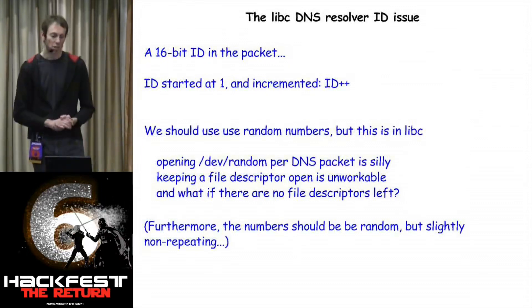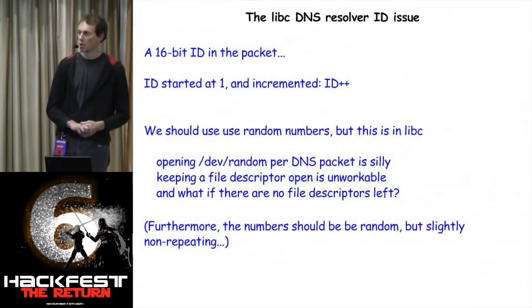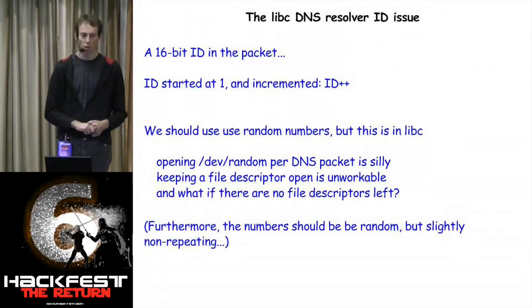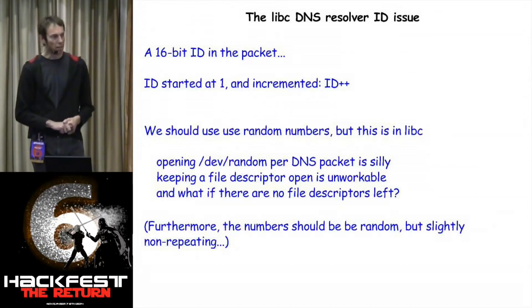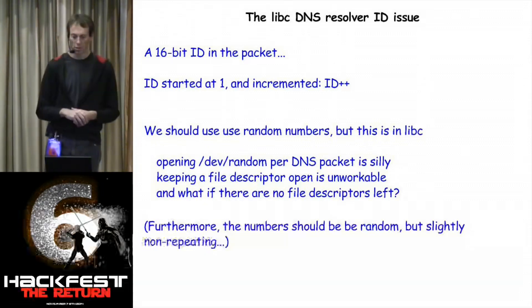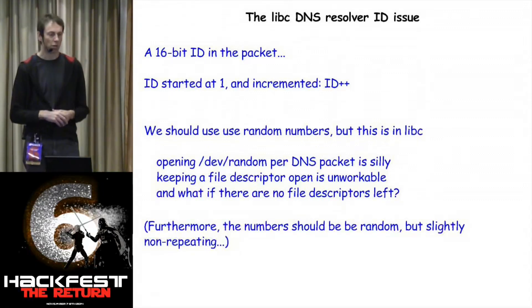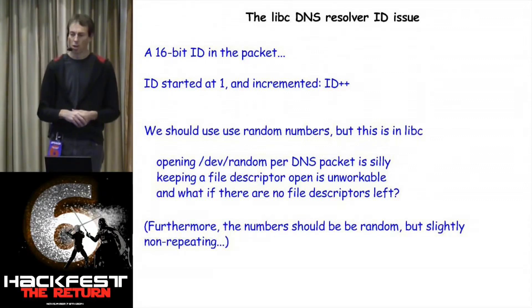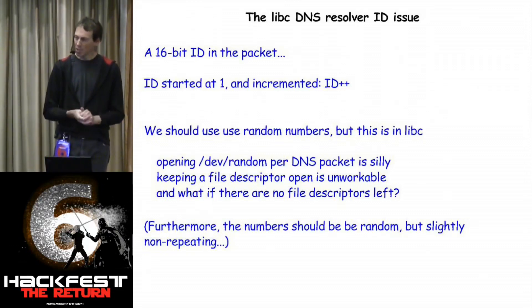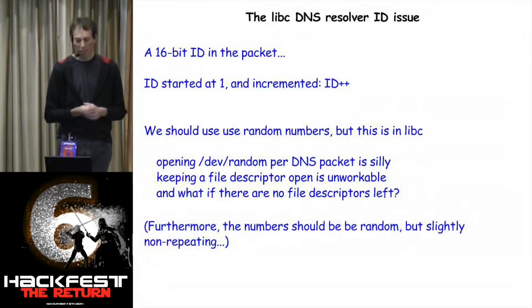Soon after, we also realized a similar scenario was happening in the DNS resolver, where the ID in every single packet was initialized at start to one or something like that and incremented on every packet, so replay attacks were possible against DNS. So here we have two scenarios where I would really like to use random numbers.